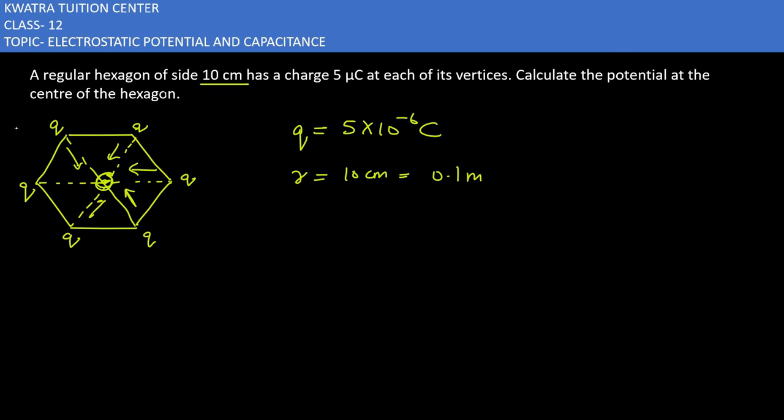The potential at center is the sum total due to all charges. We'll use the formula: V = 1/(4πε₀) × [q/r + q/r + q/r for the third, fourth, fifth, and sixth charges].